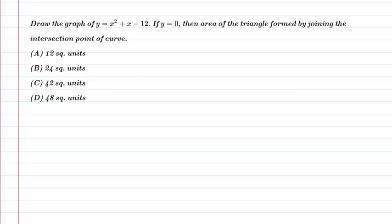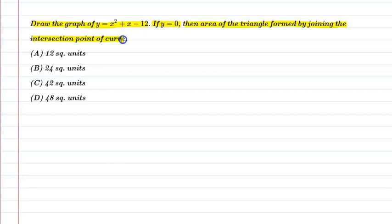Hello students, let us understand the following question: draw the graph of y is equal to x square plus x minus 12. If y is equal to 0, then find the area of the triangle formed by joining the intersection points of the curve. So let us see the given information in this question.